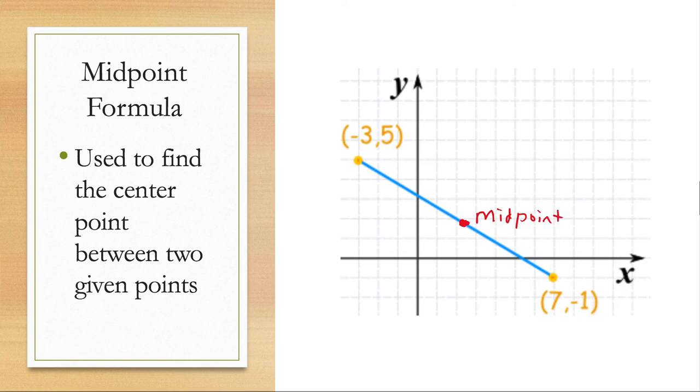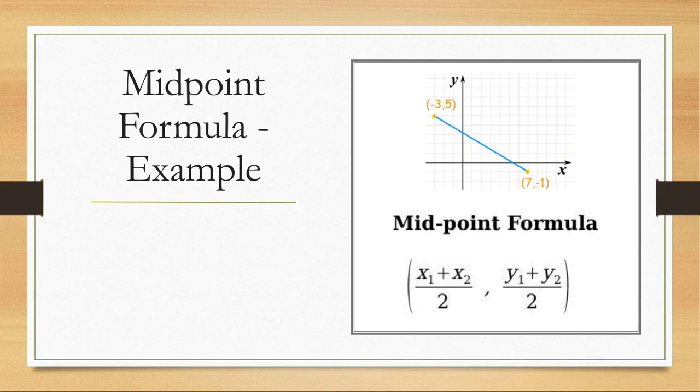So let's look at how we find that midpoint. Our midpoint formula tells us to take the x's and add them together and divide by 2, and then take the y's and add them together and divide by 2. It's almost like you're averaging your x values and you're averaging your y values.